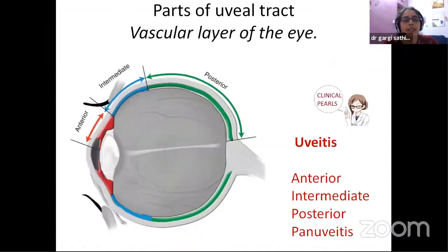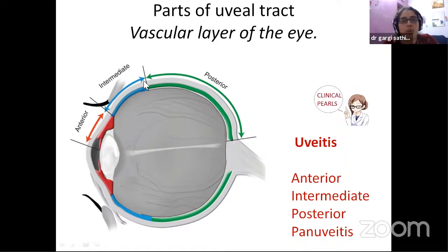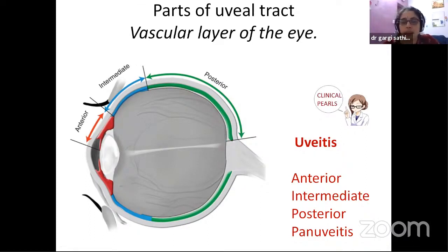The parts of the uveal tract other than iris, ciliary body, and the choroid — you should know that anterior uvea means iris and the anterior ciliary body. Intermediate uvea means the posterior ciliary body, pars plana, and the anterior part of the retina, choroid, and the hyaloid. And posterior uvea is the choroid, because that is how we classify anatomically — the standard classification of uveitis.